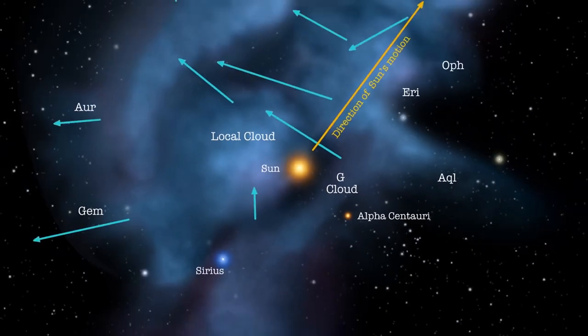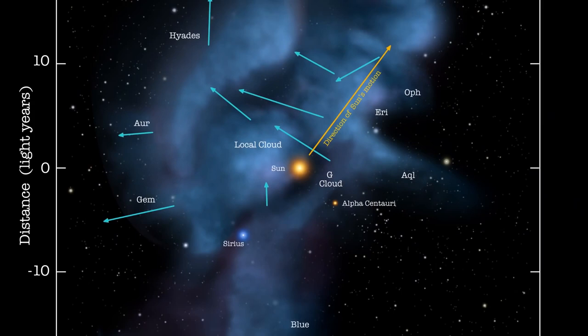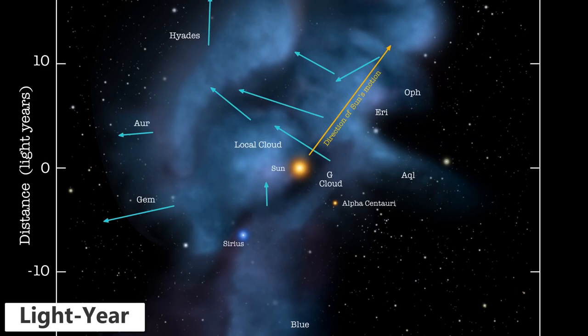Once we go beyond the solar system, we arrive in our interstellar neighborhood. Here we shift to the light year unit of measurement, which is the distance that light travels in a full earth year, or about 9.461 trillion kilometers.